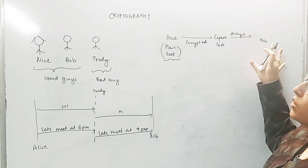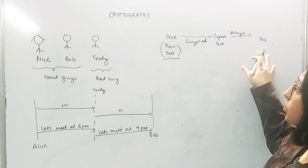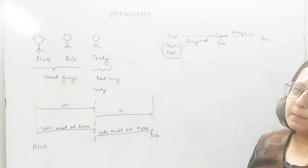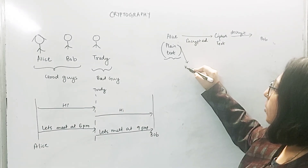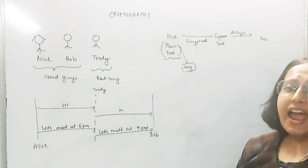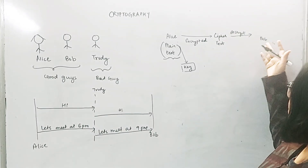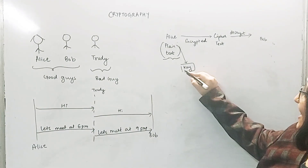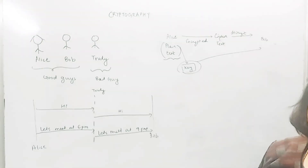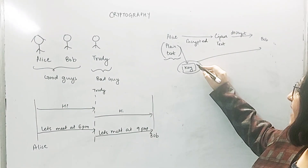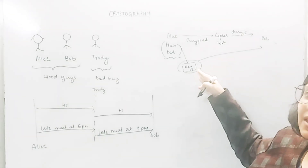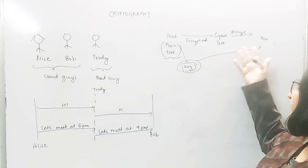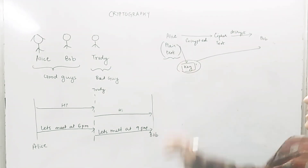In order for Bob to decrypt the message, Bob should know the way in which Alice encrypted it. Alice used something called a key to encrypt her message, and Bob needs that same key to decrypt it. The key has to be communicated over the channel. But if Trudy gets hold of that key, there is no meaning to encryption and decryption, because Trudy will be able to get hold of the plaintext message.